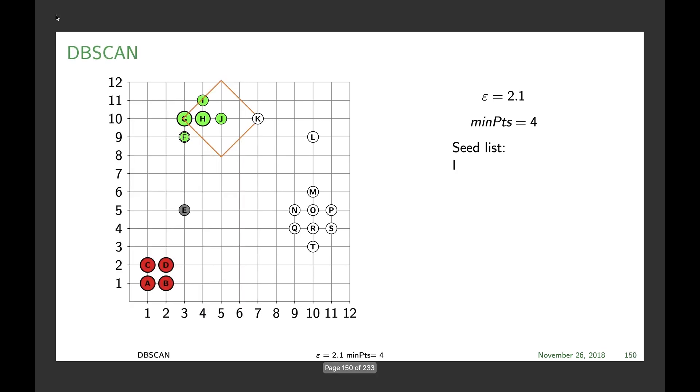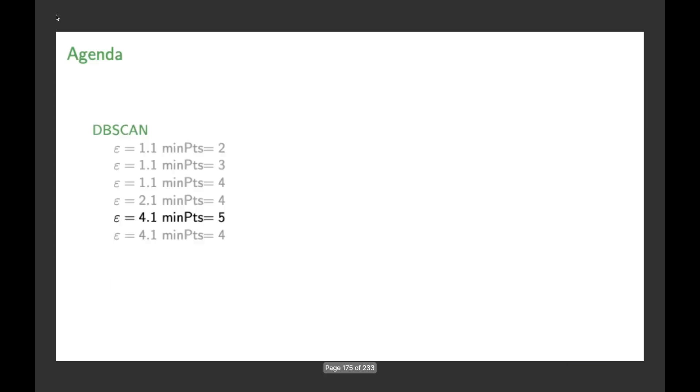F being a noise point for the moment. Then G, H, J, and I becoming core points. Something that you can immediately see: K is in range of J now, making K a border point for the second cluster. L remains a noise point, and all points in the third block here become the core points of the third cluster. As you can see, our cluster range has now increased since we have an epsilon of 2.1.